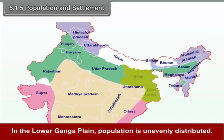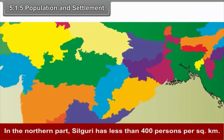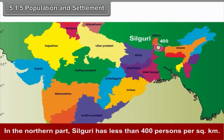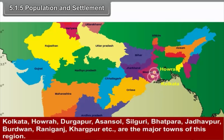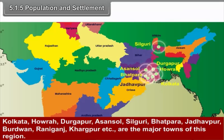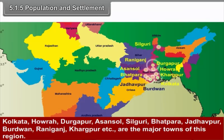In the lower Ganga plain, population is unevenly distributed. In the northern part, Siliguri has less than 400 persons per square kilometer. Near Kolkata and Howrah, population density is about 1000 persons per square kilometer. Kolkata, Howrah, Durgapur, Asansol, Siliguri, Bhatpara, Jadavpur, Burdwan, Raniganj, Kharagpur, etc. are the major towns of this region.